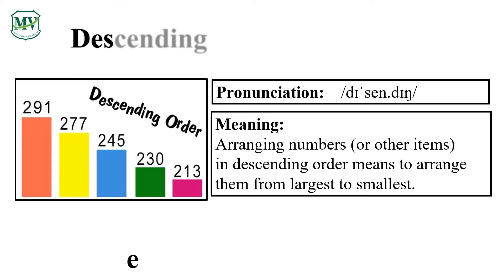Please repeat the word after me: descending. Awesome! Arranging numbers or items in descending order means to arrange them from largest to smallest.